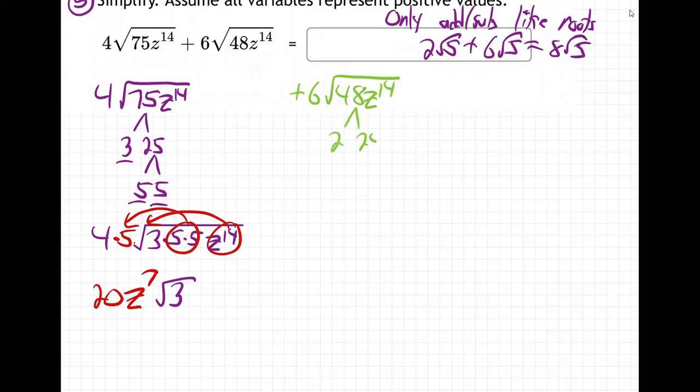So this is going to be 2 times 24. That's 4 times 6. That's 2 times 2, 2 times 3. So what do we have then? We have 6 square root of, and how many 2s do we get here? We've got 1, 2, 3, 4 2s. A 3. And our z to the 14th.